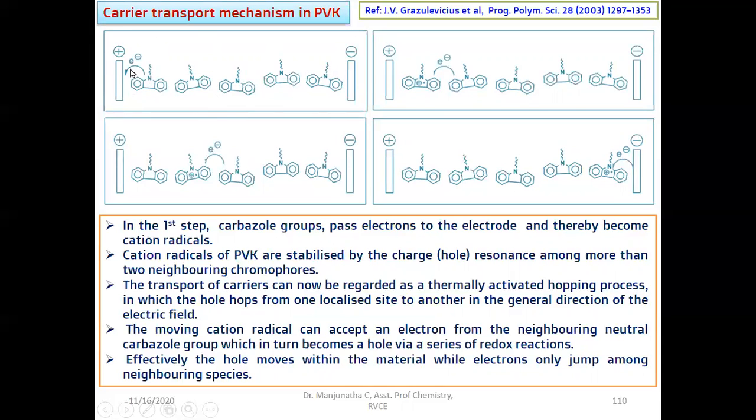In the first step, this carbazole group passes the electrons to the anode. Anode is where oxidation reaction takes place, it accepts electrons. The electron present on the nitrogen atom, nitrogen has a lone pair of electrons, one of the electrons is transferred to anode. This is called oxidation reaction, because of the oxidation of electrons when they are exposed to suitable light of suitable wavelength.